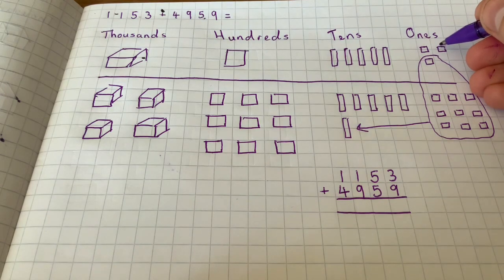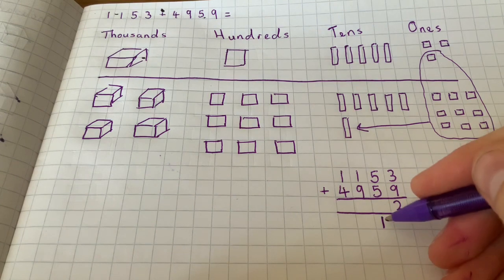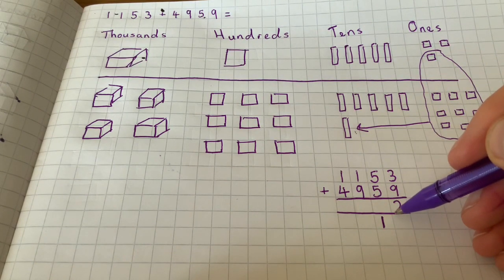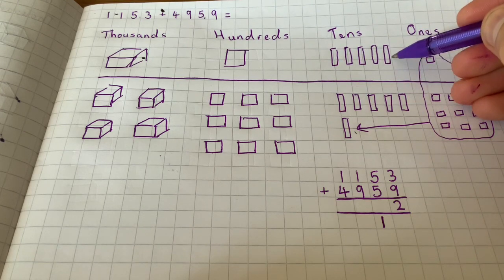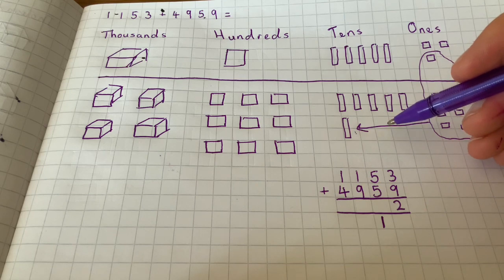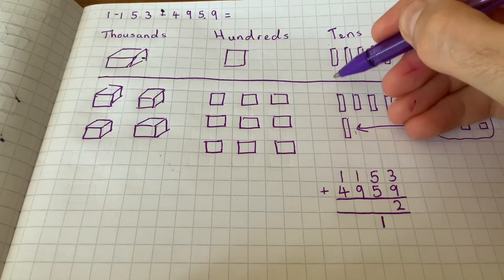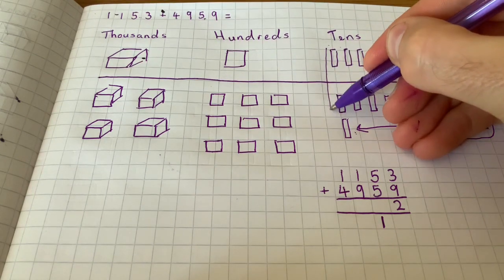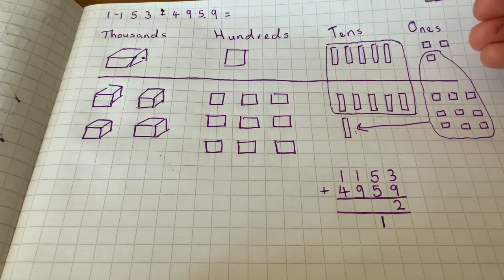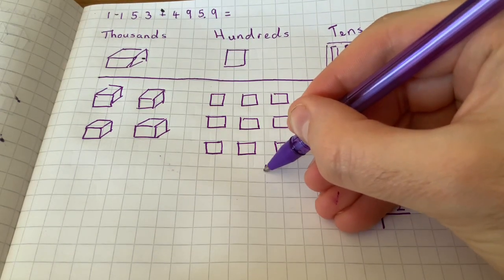So we've got two ones here. So represent that down here. So that's my ten ones that have just been created in that column. And we've got five tens add six tens. Now I know that's eleven tens, and also know that this lot here I can regroup it down here.